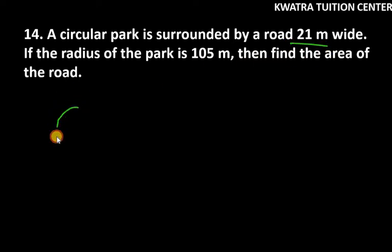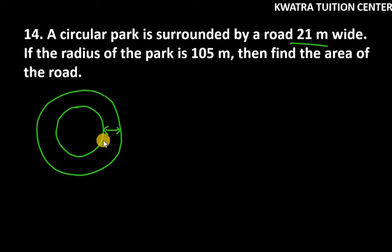We have a circular park and around it is a road. The width of the road is 21 meters. Now it is given that the radius of the park is 105 meters.